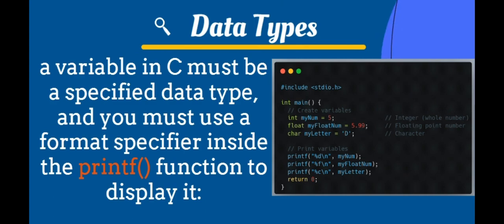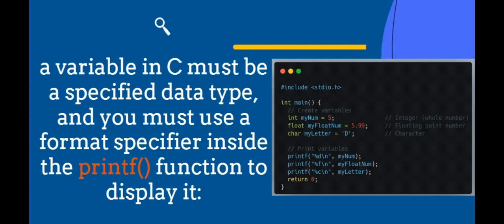First, what is the data type in C? As explained in the last video, a variable in C must be a specified data type, and you must use a format specifier inside the printf function to display it, like this example.